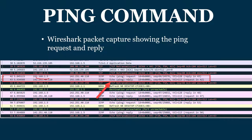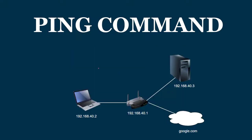Here's a simple diagram of my little network. My laptop has the 40.2 address. If I wanted to ping my router, my laptop sends an ICMP request, and if the router accepts it, it replies with an echo reply. The same thing applies to any other address — if I ping 40.3, it sends the echo request and, if nothing's blocking it, replies with the echo reply.